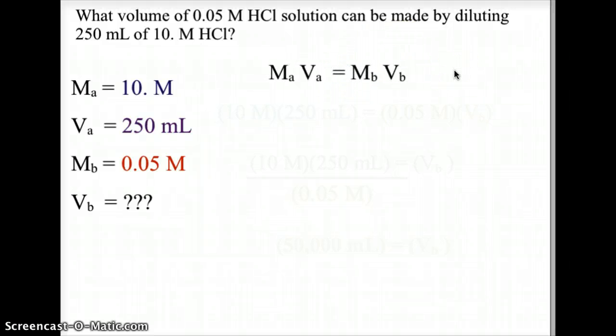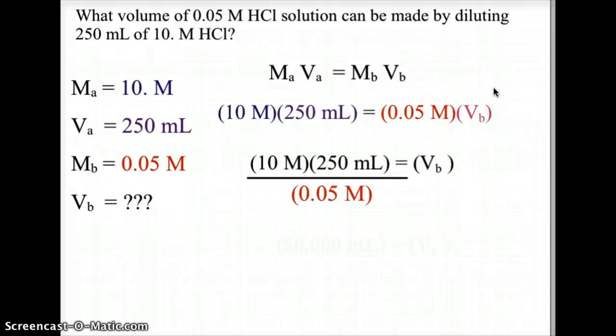We use the same equation, MAVA equals MBVB. Again, plugging in the values and solving it algebraically, we end up with 10 molar times 250 milliliters divided by the 0.05 molarity. And what we note here is that we get 50,000 milliliters of solution. Now that seems quite a bit, but notice the change in molarity from 10 molar down to 0.05 molar. That's a tremendous change in concentration, so that's going to need a much larger volume, and that's why we have 50,000 milliliters of this volume.